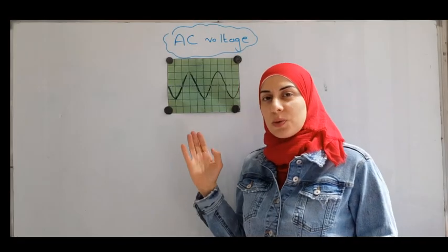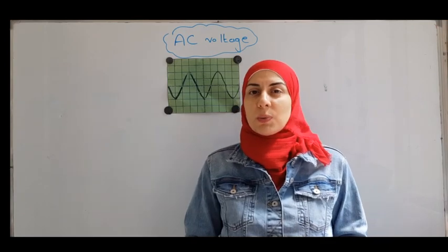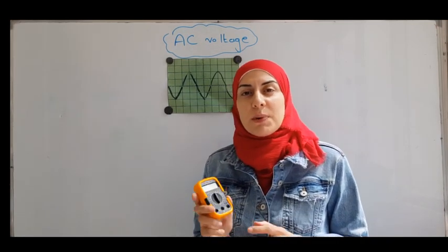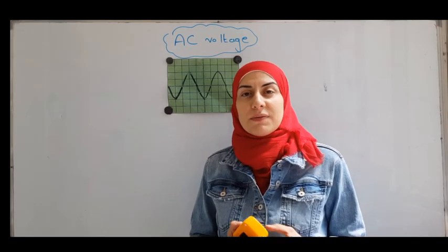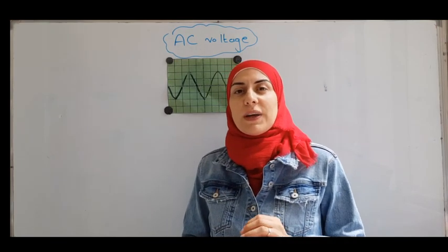As we said, this is the way a screen of the oscilloscope shows us an AC voltage. But what happens if we use the multimeter to measure an AC voltage? The multimeter doesn't give you U maximum, it gives you U effective. So remember, if you use a multimeter to measure an AC voltage, it gives you U effective.